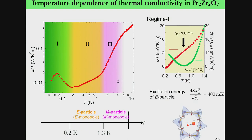In the intermediate temperature regime two, we find a characteristic temperature dependence at around 700 mK. This can be clearly seen in the temperature derivative of thermal conductivity, which shows a dip at around this temperature. This temperature is very close to the excitation energy of the E particle, estimated to be 400 mK. Thus, this feature in κ_xy is attributed to E-particle excitations.